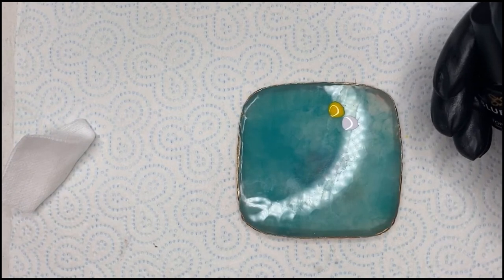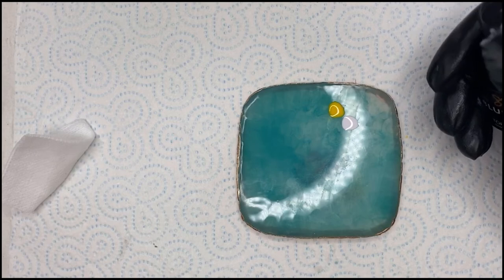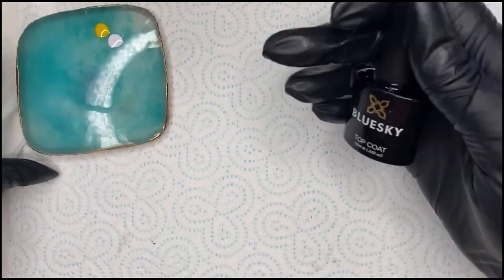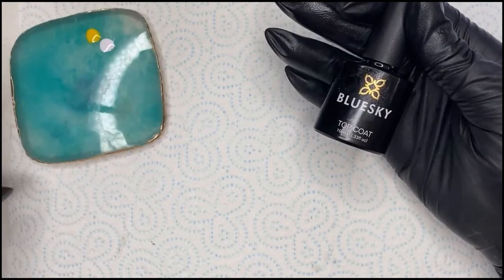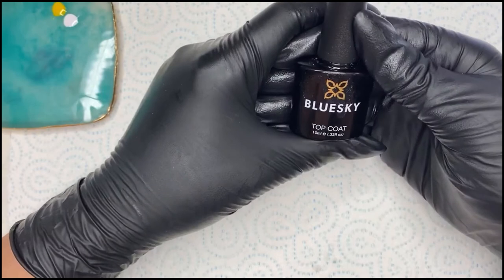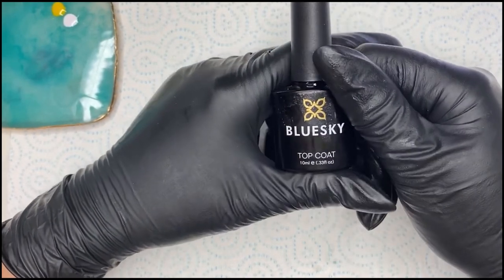Obviously because it's got little petals on and they're round dots, it does make the nail slightly bumpy. So when you are putting your top coat on, make sure that you are putting a generous amount of top coat on. For this video, I'm using the Blue Sky top coat. I don't tend to use the expensive professional nail technician top coats when I'm doing these kind of videos because they're not on a client.